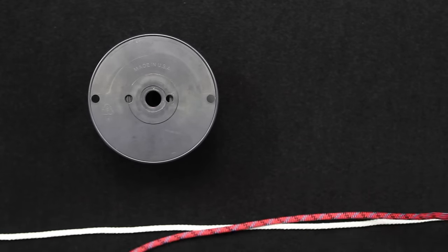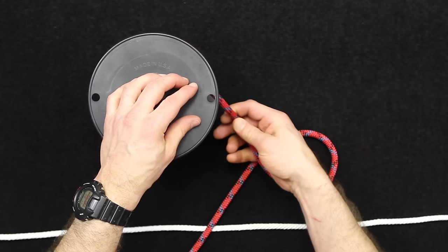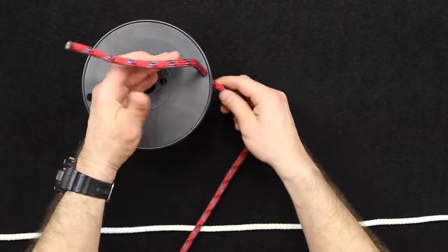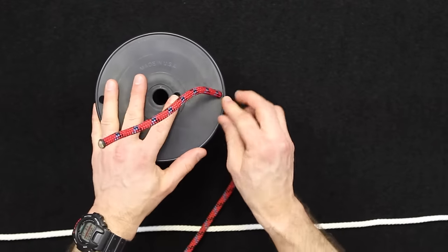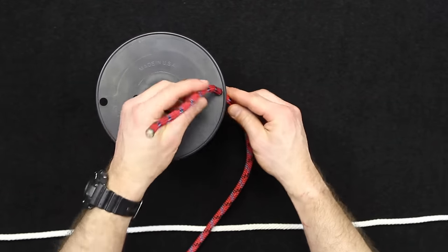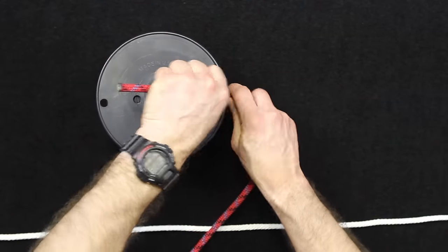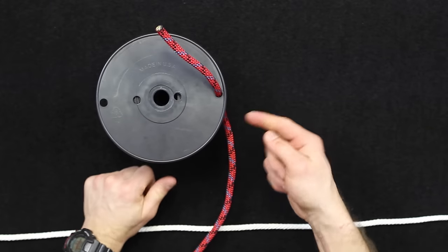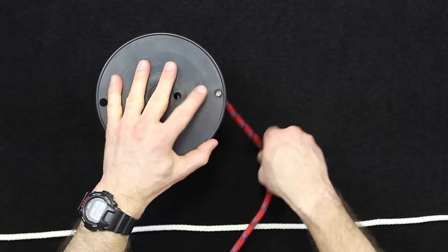The other way is to impede a line from pulling through an object. In this case, I have this spool here that I'm tying off onto, and a stopper knot would just prevent it from pulling through. That's what we're going to talk about today.